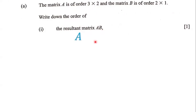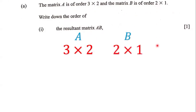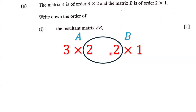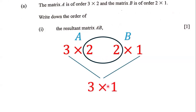The order of matrix A is 3 by 2, and the order of matrix B is 2 by 1. Notice that these two inner numbers are the same, which means we can multiply these two matrices, and the order of the resultant matrix is 3 by 1.